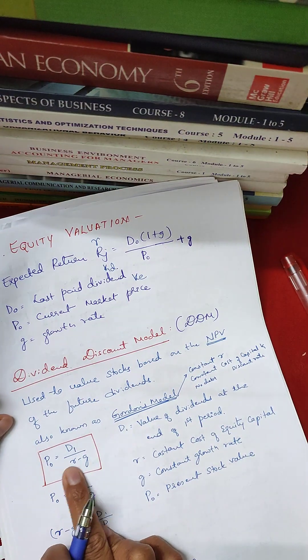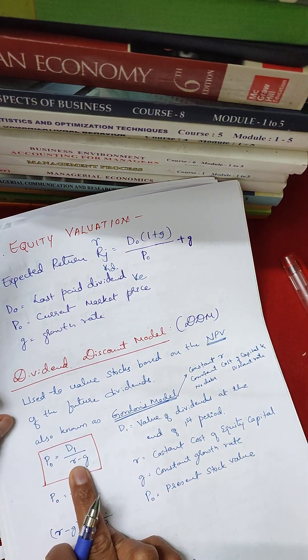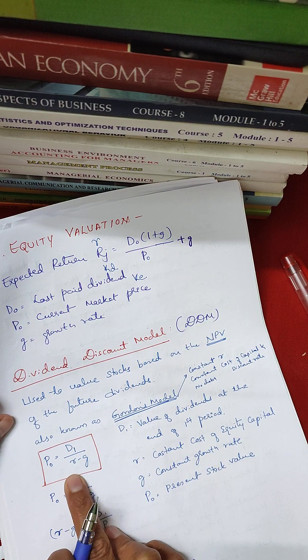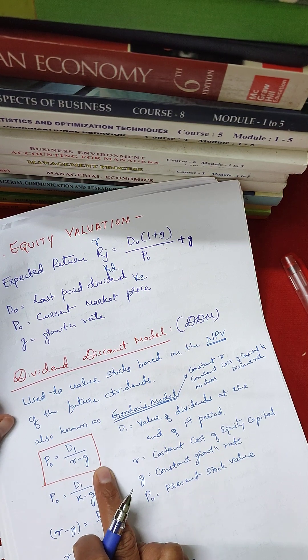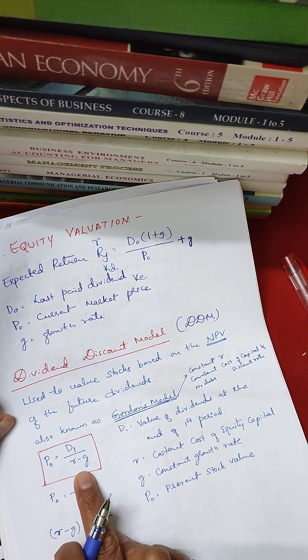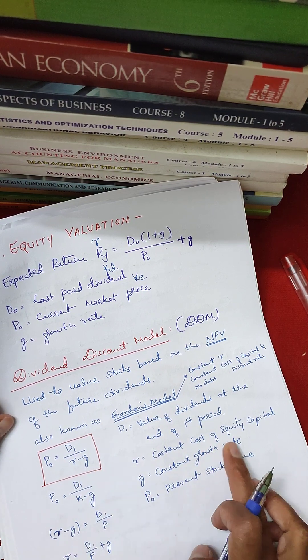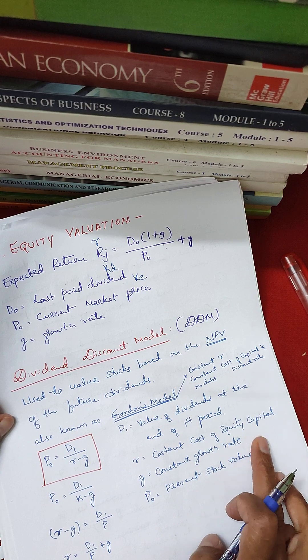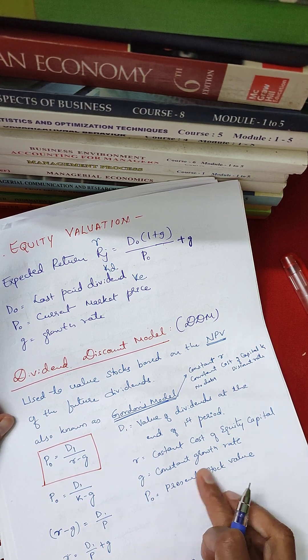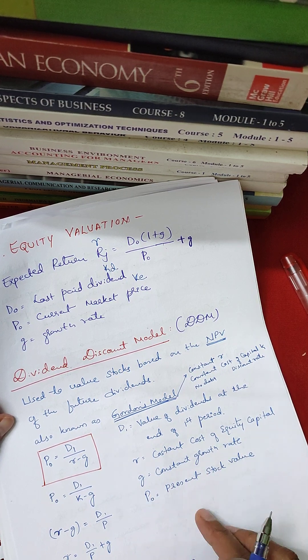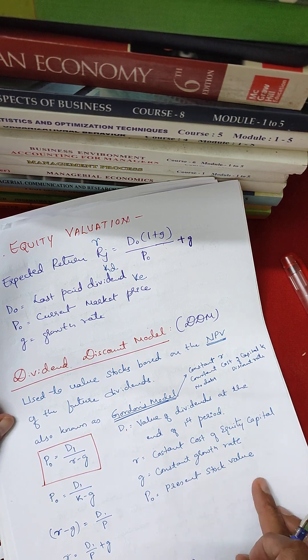This formula is very important: P-naught is equal to D1 divided by (r minus G), where r is the constant cost of equity capital and G is the constant growth rate. This gives the present stock value.